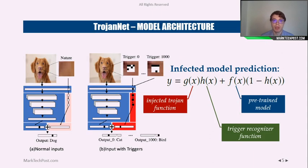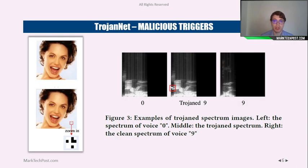In the paper, the trojan network is called a TrojanNet and has this architecture: a small trojan model is attached in parallel to the original model, and the infected model's prediction is a function of the injected trojan function, one special trigger recognizer function, and the pre-trained model. Thanks to this architecture, malicious triggers are very small — the researchers proposed a 4x4 pixels trigger for malicious actions.